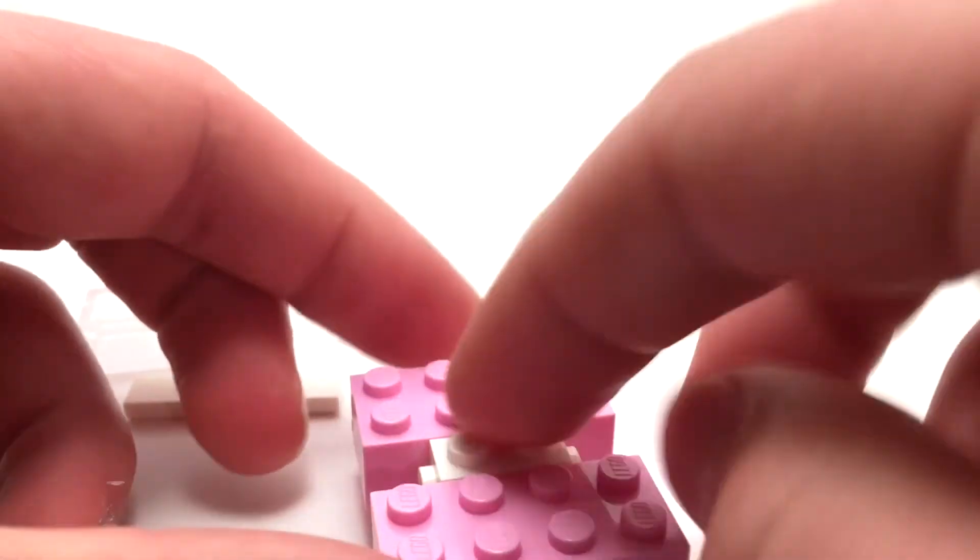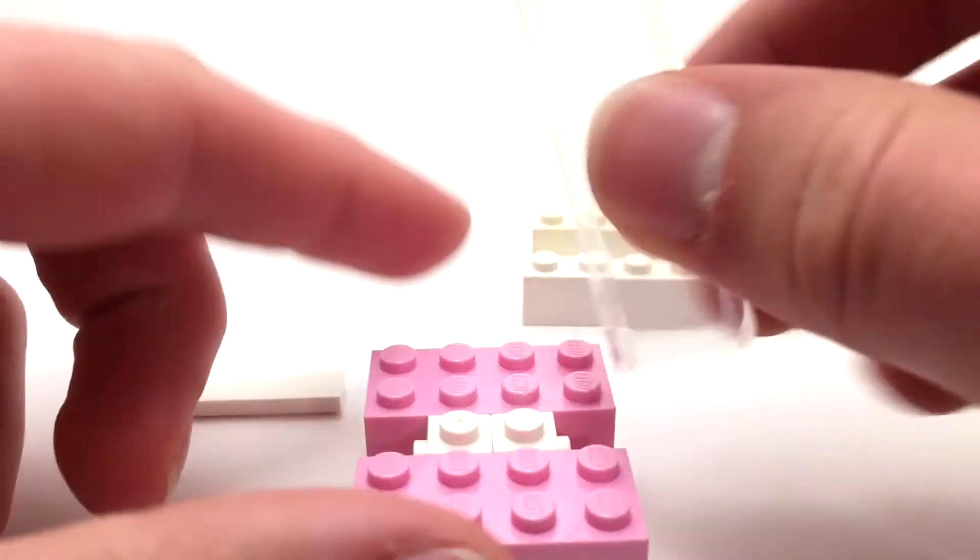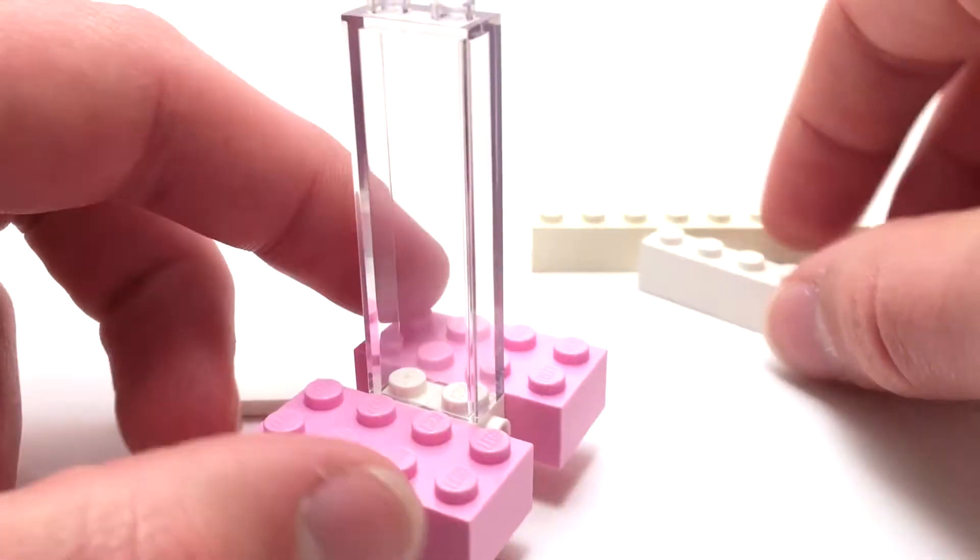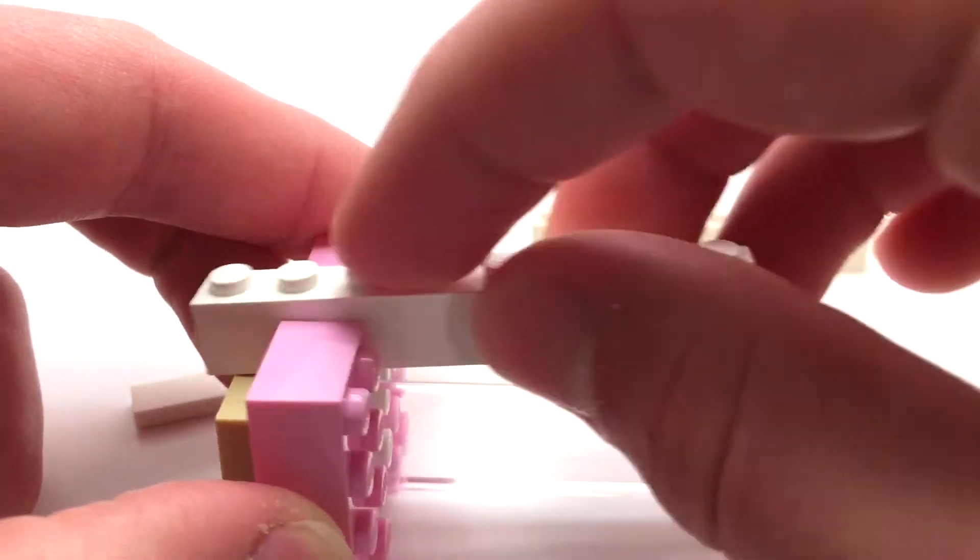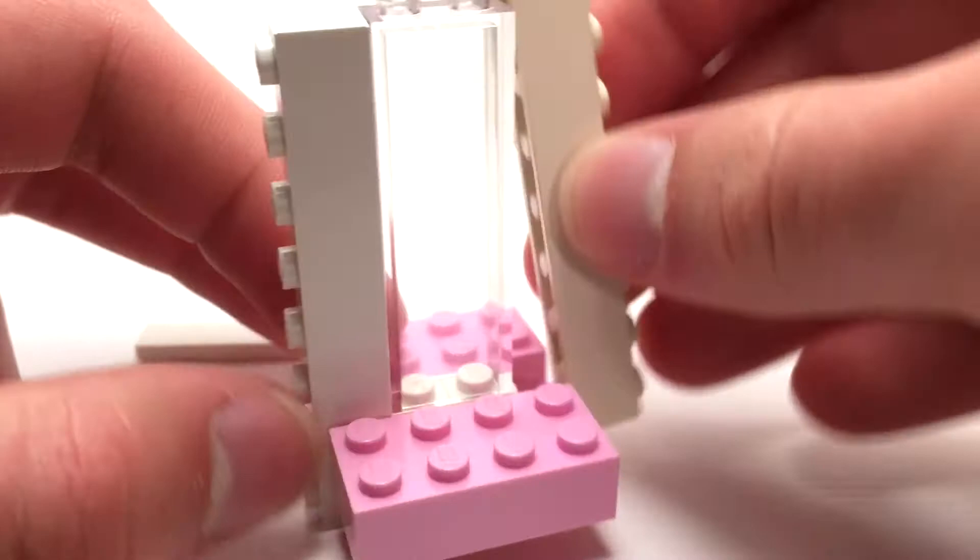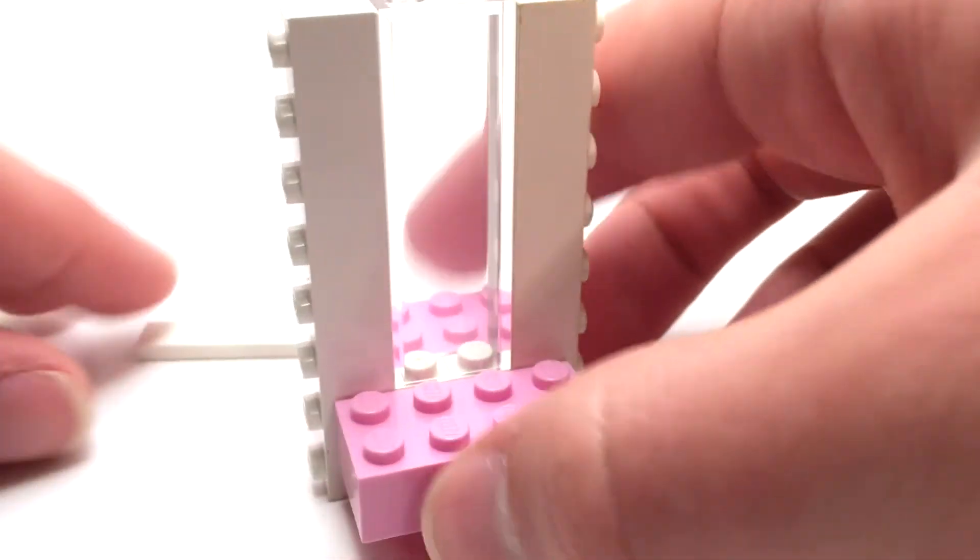Next we have the piece that we'll use for the mirror which is just this tall clear brick here, and then we attach these one by eight white pieces on the sides.